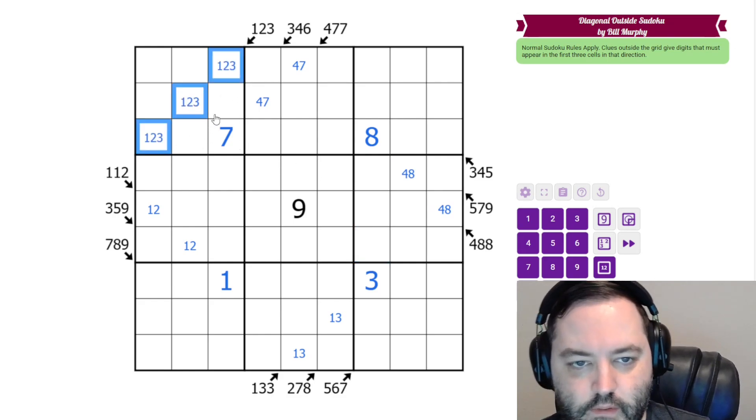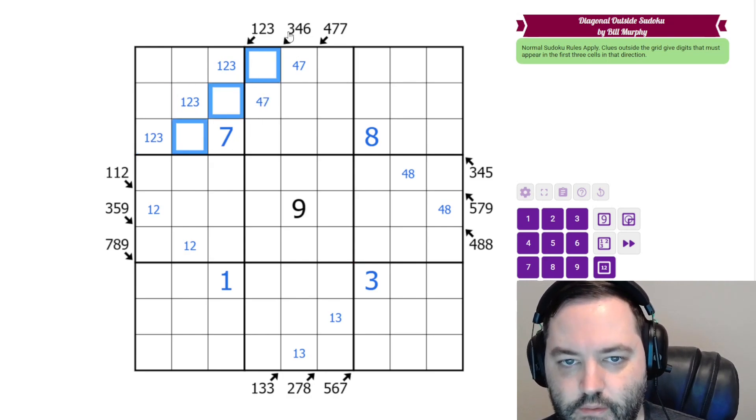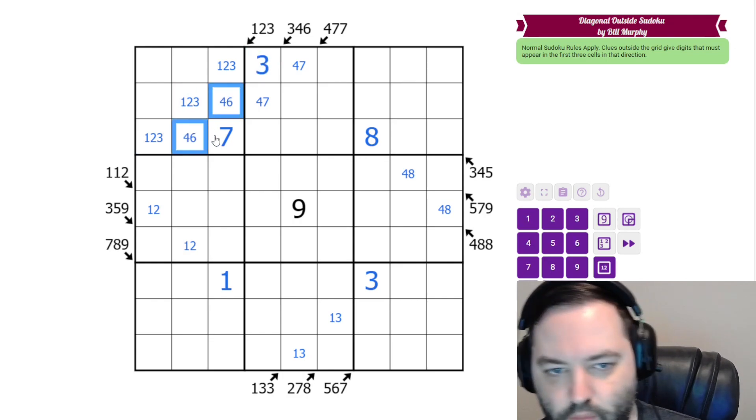Now, let's look at this. These are 1, 2, 3, all in the same box, but look at the effect that it has on this clue. This clue also needs a 3, but now the 3 can't go in these two cells, because we already have our 3 in this box. So this must be 3, and these are 4 and 6.